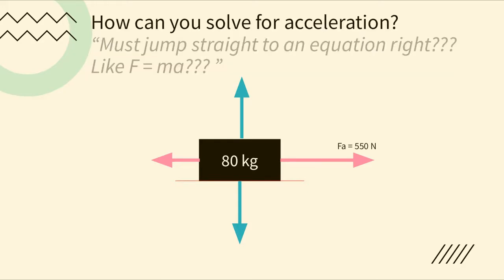The question asks for acceleration. Most of you will be too quick to jump to F = ma. While you eventually want to use F = ma, the only variable you have right now is mass — the 80 kilograms. The capital F on its own means net force, which we don't have yet, and we're solving for acceleration. So you're missing two variables out of a three-variable equation and can't use F = ma yet.